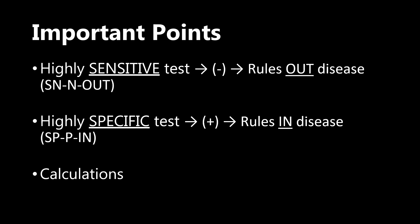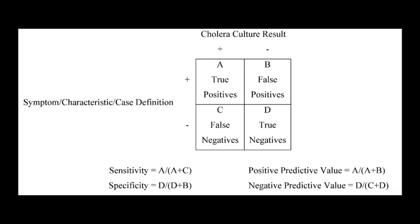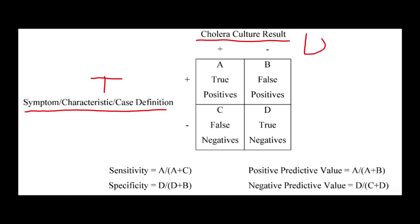The other important point is the calculations, and we're going to be going through that. This is a figure I got from a research paper published a couple years ago, talking about the sensitivity and specificity of various signs and symptoms of cholera in Haiti. I chose this picture because it's a very clear and easy representation of how you need to be visualizing and calculating everything. The left side is going to be the test, and the top is going to be the disease — positive, negative, positive, negative.